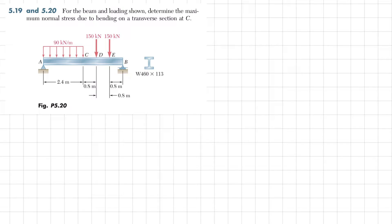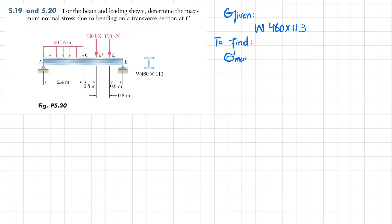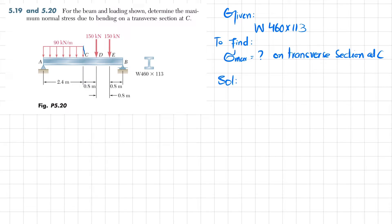The given data: this is a wide flange beam W460×113. What we have to find is the maximum normal stress on the transverse section at C. Let's start with the solution. We know we have to cut the beam at point C.